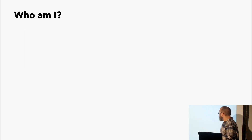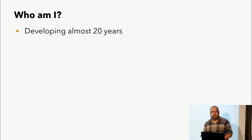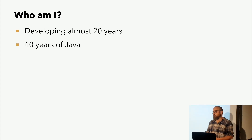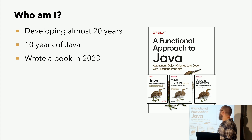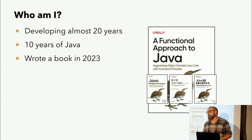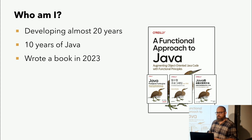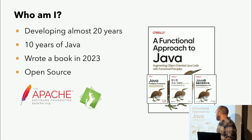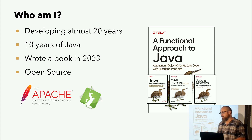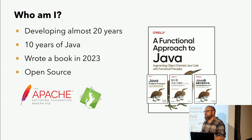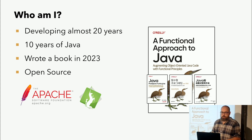Wer bin ich? Mein Name ist Ben Weidek. Ich programmiere seit fast 20 Jahren, zehn davon inzwischen Java, aber auch iOS, .NET und diverse andere Kleinigkeiten. Letztes Jahr habe ich ein Buch veröffentlicht über einen funktionalen Ansatz mit Java, dank der ganzen neuen Features wie Lambda, Immutables und so weiter. Nebenbei blogge ich auch ein bisschen und schreibe Artikel zu diversen Themen, der Schwerpunkt ist meistens Java. Ich bin auch in Open Source aktiv, hauptsächlich im Apache-Tapestry-Projekt, das ist ein komponentenbasiertes Web-Framework, das auch vom Bytecode-Henne-Ei betroffen ist, und bin da im Project-Management-Committee.